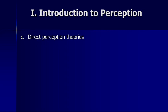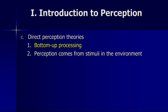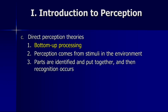There are different theories regarding perception. The direct perception theories primarily rely on what we call bottom-up processing — that is, perception is primarily driven by the data in front of us, the information striking our sensory organs. So perception comes from stimuli in the environment, and parts are identified and put together and then recognition occurs. One of the ways in which we actually perceive the environment is by taking pieces of information and putting them together and forming a perception based on that.